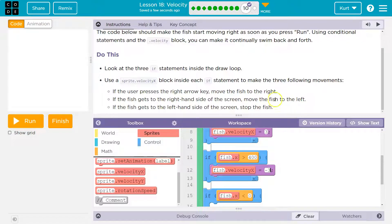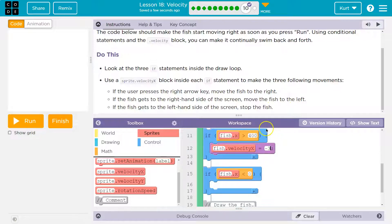If the fish gets to the left hand side of the screen, stop the fish. Oh, now we have to stop it. Okay, well, what would make it stand still? Well, if negative three makes it go this way and three makes it go that way, I bet if we set the velocity to zero so it doesn't change it at all each loop, it will stop moving.